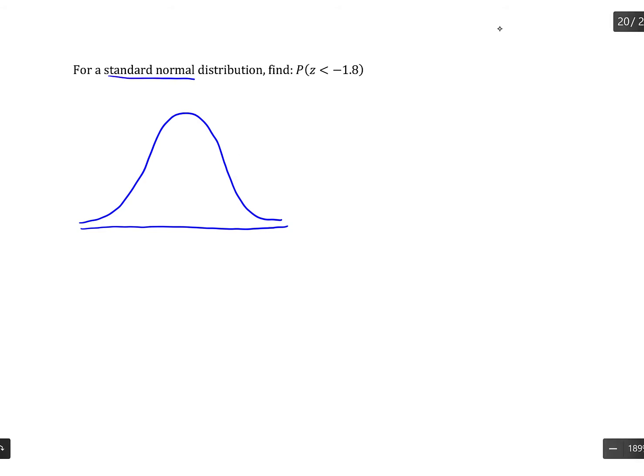Since this is a standard normal, the mean is 0 and the standard deviation is 1. So mean of 0 is right in the center.